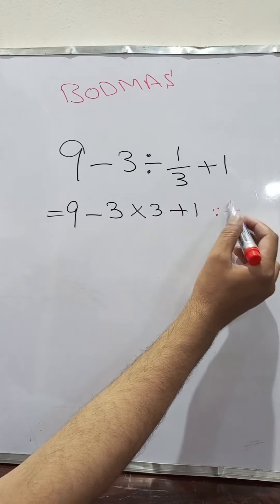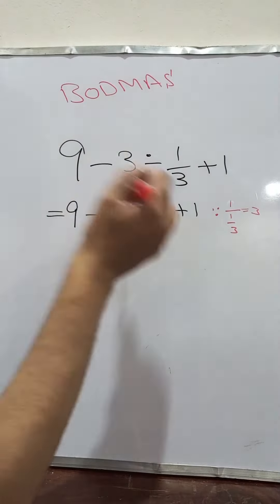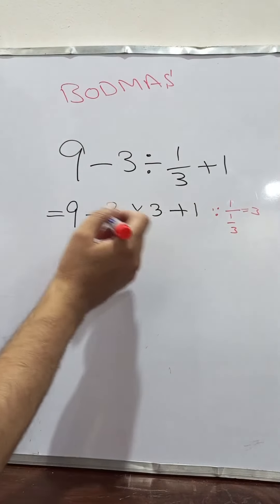And 1 divided by 1 over 3, it always becomes 3. So that is why we replace 1 divided by 1/3 by 3.